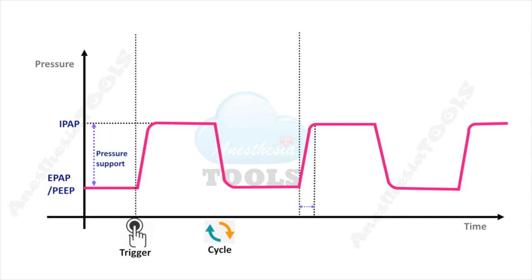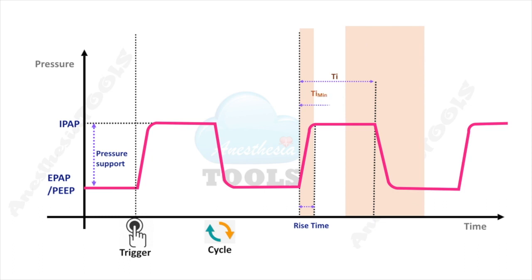If rise time is short, the flow must be high to reach IPAP quickly. If rise time is longer, a lower flow can gradually build up pressure to IPAP. The time until cycling to exhalation is the inspiratory time TI. The patient may cycle over a range: TI minimum is the minimum allowed — even if the patient tries to exhale earlier, the machine delays cycling. TI maximum is the upper limit — if the patient hasn't cycled by TI max, the machine forces cycling to exhalation.